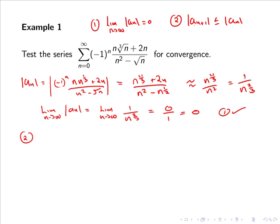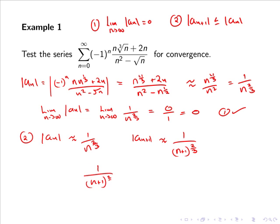For condition 2, we need to show that |a_{n+1}| ≤ |a_n|. Since |a_n| is roughly 1/n^(2/3), we can see that |a_{n+1}| is roughly 1/(n+1)^(2/3). Since (n+1) is in the denominator and is larger than n, this means 1/(n+1)^(2/3) ≤ 1/n^(2/3), so |a_{n+1}| ≤ |a_n|, and condition 2 is satisfied.